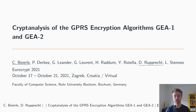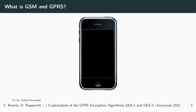Welcome to the talk about analyzing the GPRS ciphers GEA1 and GEA2. When Apple launched its iPhone in 2007, it made the Internet accessible for everyone via a mobile device. The first iPhone supported only a 2G data connection. And even though we talk about 5G today, 14 years later, 2G data connections are still around us, for example in case of poor network reception or IoT applications.